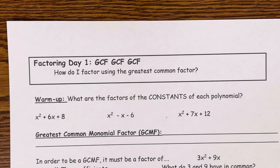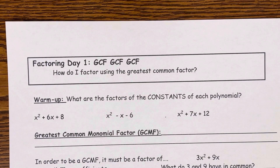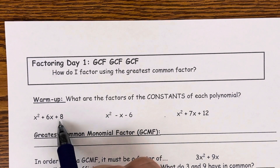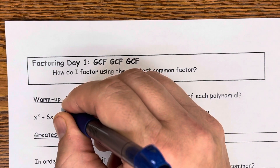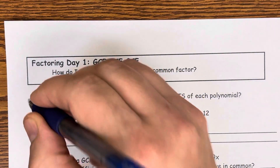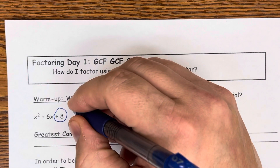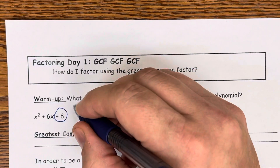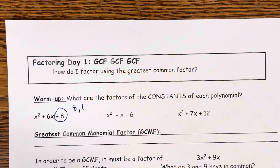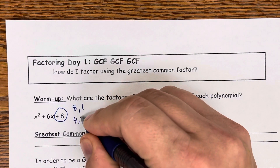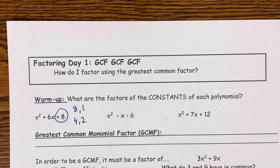For our warm-up, the question says: what are the factors of the constants of each polynomial? The constant is just the number — it doesn't have a variable with it. So 8 is the constant. What are the factors of 8? That means what times what equals 8. One pair of factors is 8 and 1. Another would be 4 times 2. So the factors of 8 are: 8 and 1, and 4 and 2.